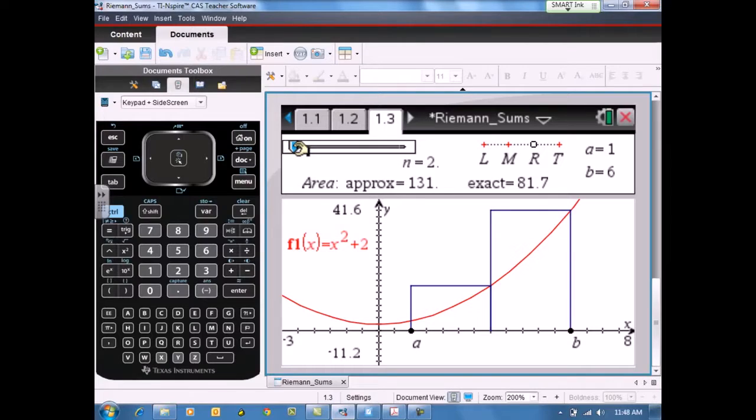There are also some wonderful questions about whether this approximation is an over approximation or an under approximation. If you recall, for the left endpoint rectangles, this approximation would be an under approximation. Whereas with the right rectangles, this is an over approximation.